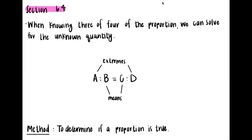I don't necessarily mind which way you go about things, but whatever you use, just make sure you show all your work depending on that method. When knowing three or four of the values in a proportion, we can solve for an unknown quantity.